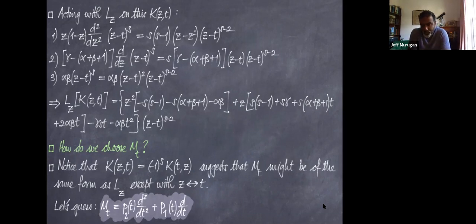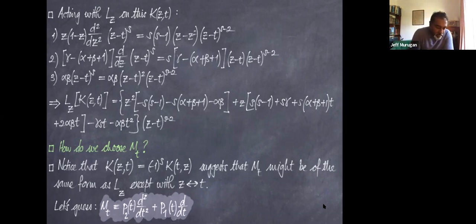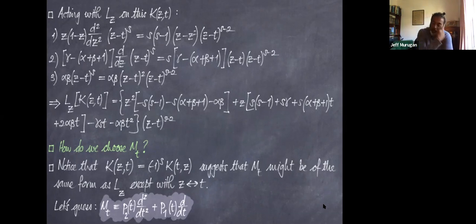We wanted to convert the differential equation Lz·u = 0 to another equation — hopefully not a differential equation, or at least a simpler one. That would be some operator Mt acting on the variable t in the integral, acting on the complementary function v(t). We want to choose things such that Lz acting on k equals Mt acting on k.